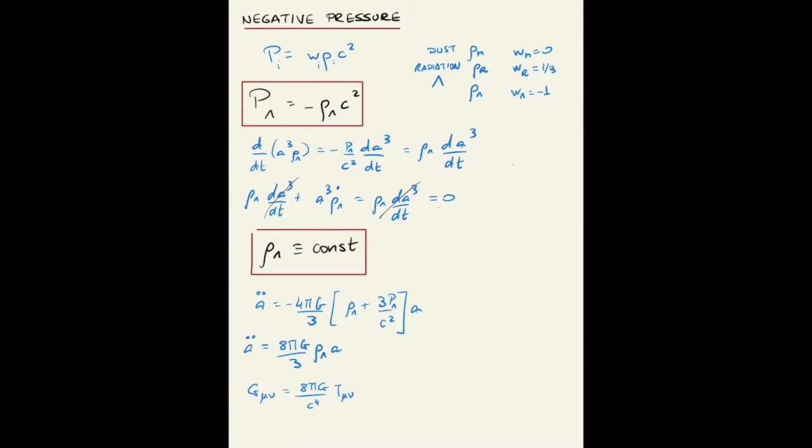What you need to know is that the left hand side here is the curvature of space-time and the right hand side is the energy momentum tensor. The unit of the energy momentum tensor is rho c squared so it has units of pressure.